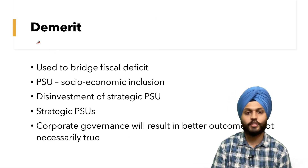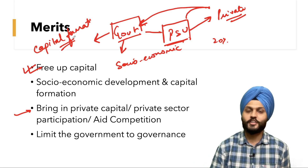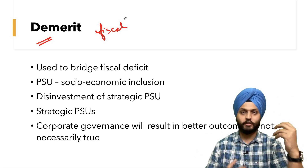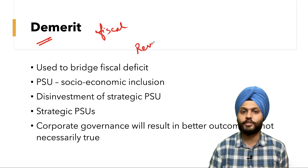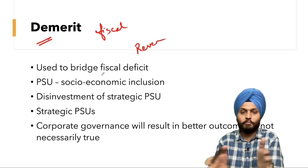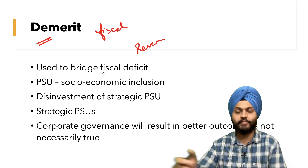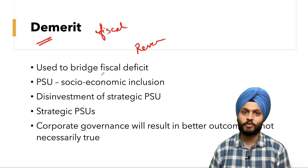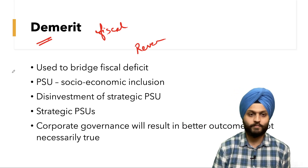Now the demerits of disinvestment. The idea was that capital formation would happen, but time and again the government has a fiscal deficit — revenue estimates are too high, expenditure is more than revenue. So to bridge the gap, instead of capital expenditure, there is actually revenue expenditure. Rather than creating capital, the government is barely bridging the fiscal deficit. If capital doesn't go into public investment, infrastructure won't grow and the economy's growth will come down.